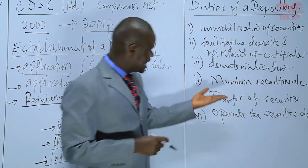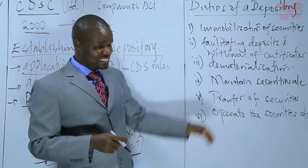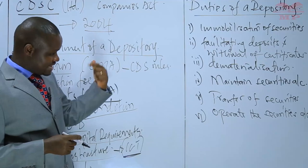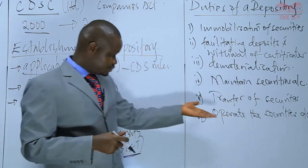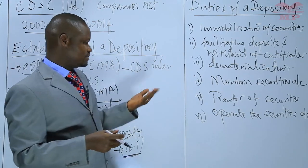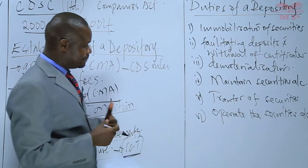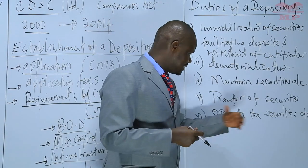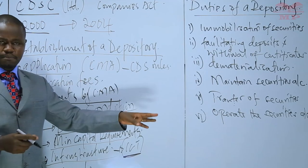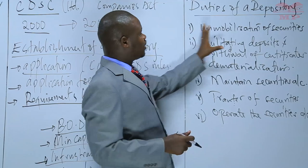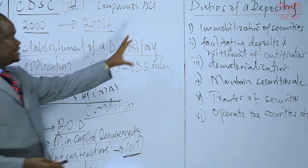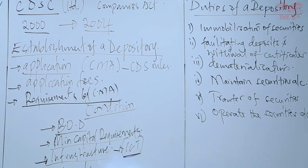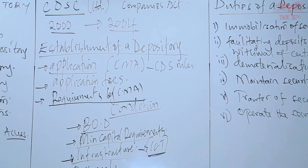Maintaining securities accounts is necessary to capture all transactions relating to the securities — whether they have been bought or sold. It is in these securities accounts that transactions are to be maintained. Any holders of securities wishing to sell, or any persons wishing to purchase, the depository will enable these transfers. The operations of the securities account — the buying and selling — all fall within the core duties every depository should handle. These are what duties would be expected of any depository licensed by the Capital Markets Authority to offer depository services.